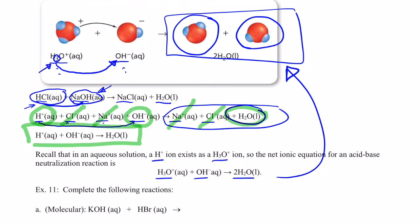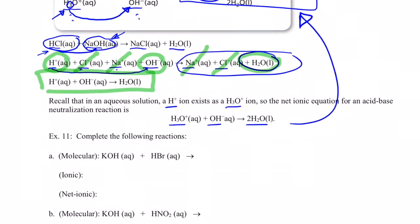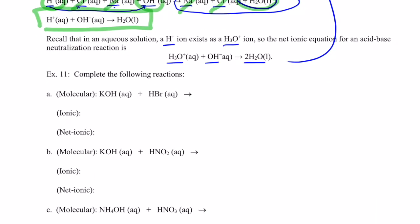You might think the net ionic equation for all acid and base reactions is what I've just shown you, but that's not the case. Let's go through some other examples. For example A, I have a strong base potassium hydroxide, just like sodium hydroxide in the previous example, and a strong acid hydrobromic acid, which is strong just like hydrochloric acid.